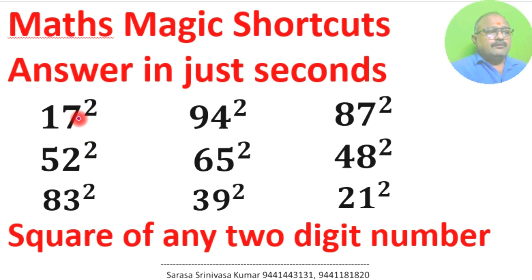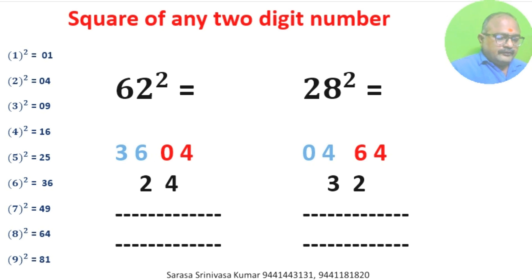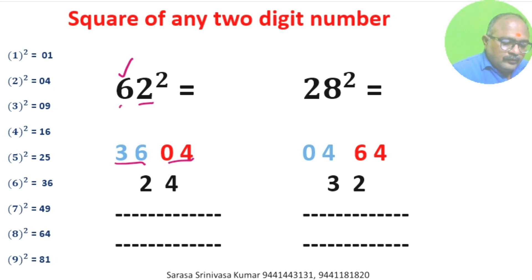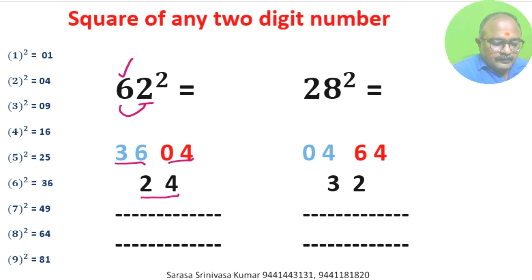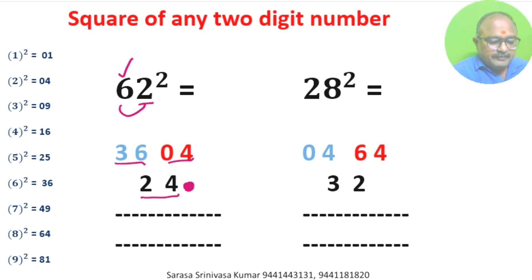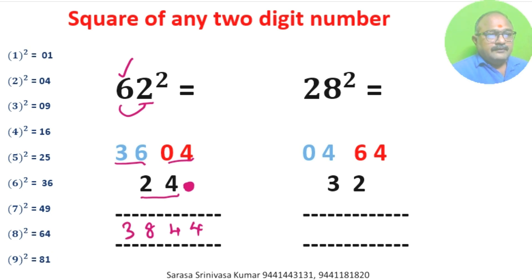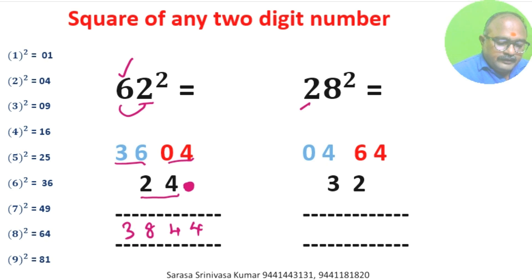Square of 6 is 36, square of 2 is 04. We multiply these two and double: 2 into 6 is 12, 12 into 2 is 24. In units place we leave a space — we don't write anything. Now we add: 4, 0 plus 4 is 4, 6 plus 2 is 8. Square of 62 is 3844.